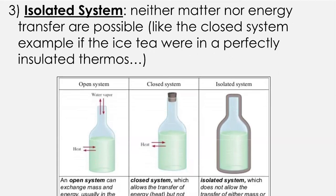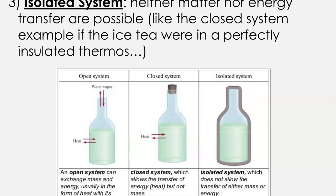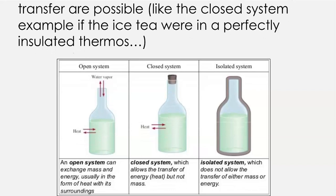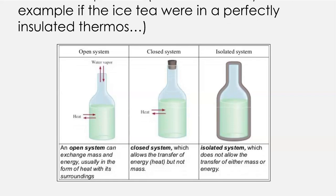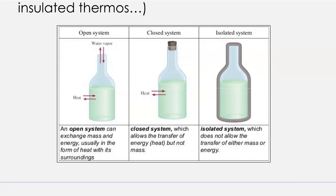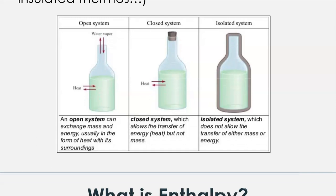An isolated system is where neither matter nor energy transfer are possible — like the closed system example if the iced tea were in a perfectly insulated thermos. A perfectly isolated system does not exist because as you know, energy can always leak — no matter how good a thermos you get, you're not going to leave hot coffee in there and have it stay hot forever. It's always going to, at some point, cool down.